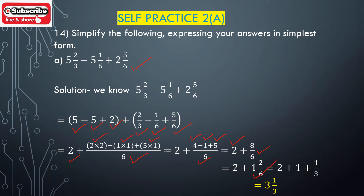Now we add the whole number parts: 2 plus 1 is 3, and the fractional part is 2/6. We reduce 2/6 to its simplest form by dividing numerator and denominator by the HCF of 2 and 6, which is 2. Dividing numerator 2 by 2 gives 1, and dividing denominator 6 by 2 gives 3. So 2/6 simplifies to 1/3.